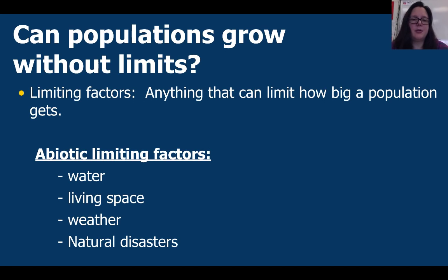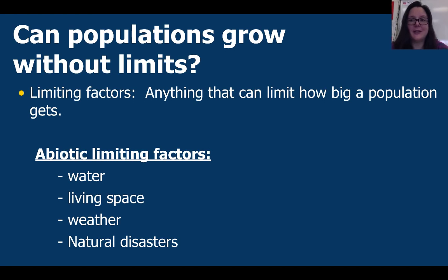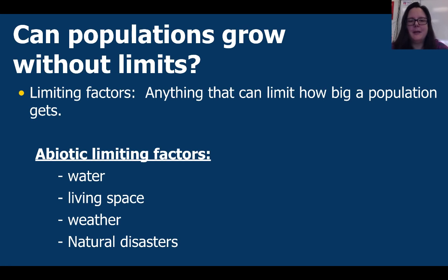So can a population grow without limits? There are things called limiting factors — anything that can limit how big a population gets. There are two types: abiotic and biotic limiting factors. Abiotic limiting factors that affect population growth include the amount of water available, the amount of living space, the weather, and natural disasters. These are all things that can limit population growth.